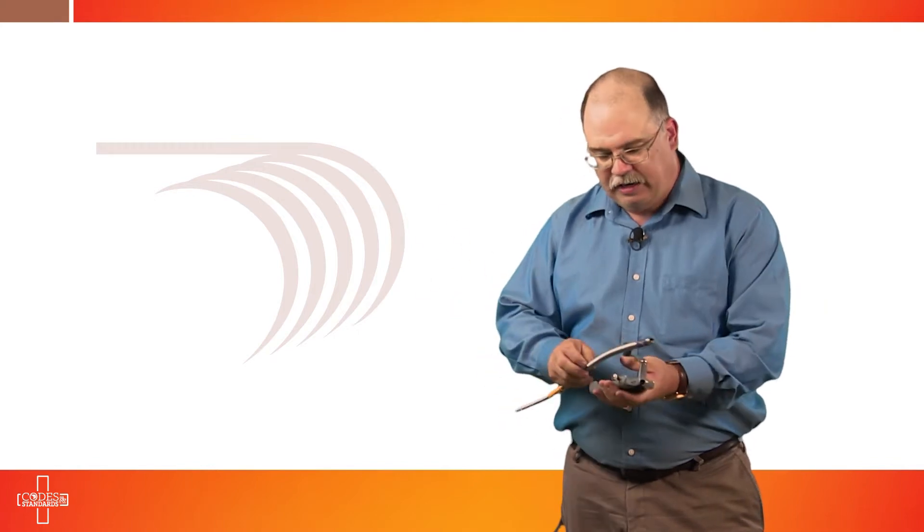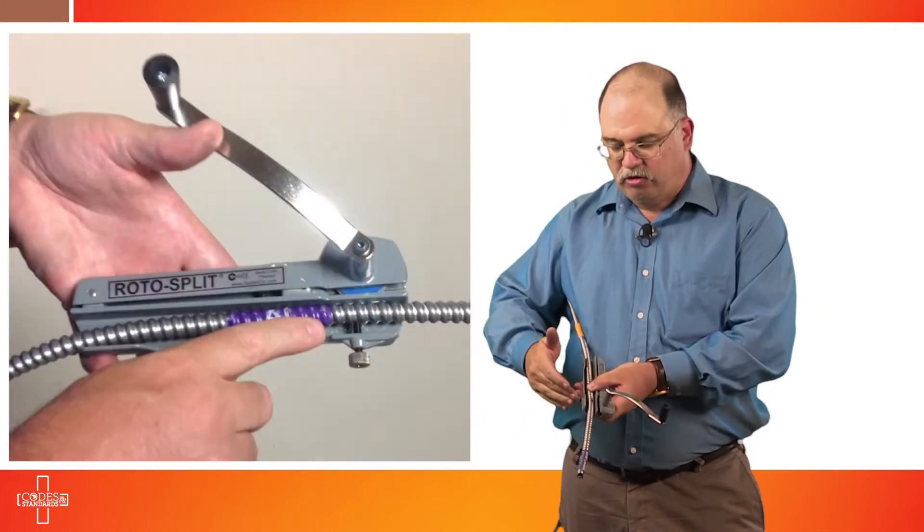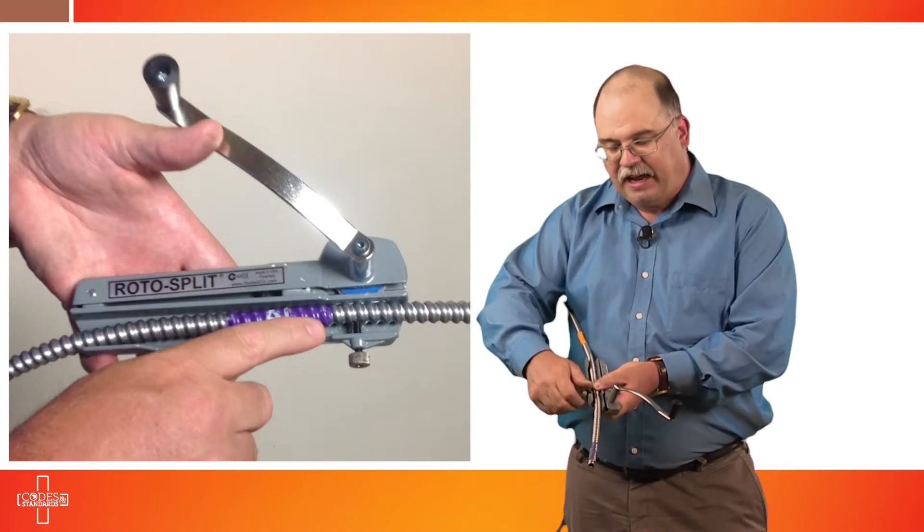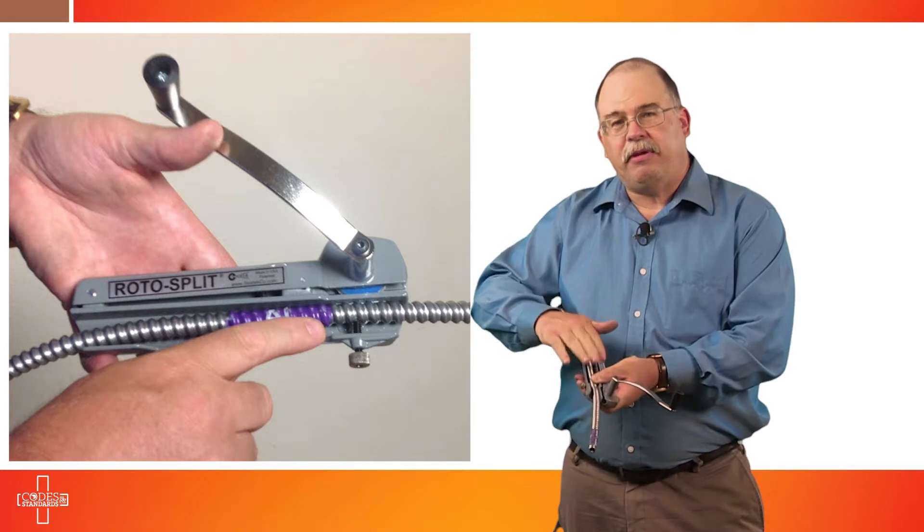We've determined that we need about 8 inches of open conductor. In other words, we need to remove the metallic sheathing to expose 8 inches. So what you do is select where you're going to start your cut in order to expose those conductors. We place it into the tool. Now this tool has a set screw that you would loosen, place the cable in, and then tighten down. And that holds the cable in place in order for you to be able to cut it.